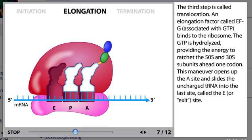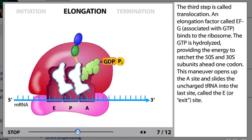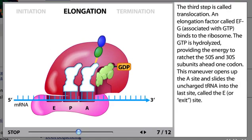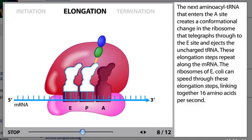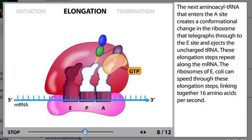The third step is called translocation. An elongation factor called EF-G, associated with GTP, binds to the ribosome. The GTP is hydrolyzed, providing the energy to ratchet the 50S and 30S subunits ahead one codon. This maneuver opens up the A site and slides the uncharged tRNA into the last site, called the E or exit site. The next aminoacyl-tRNA that enters the A site creates a conformational change in the ribosome that telegraphs through to the E site and ejects the uncharged tRNA.